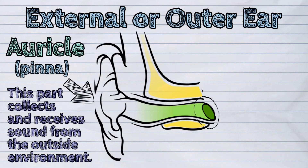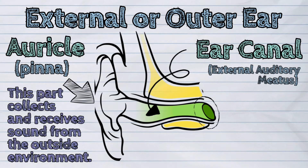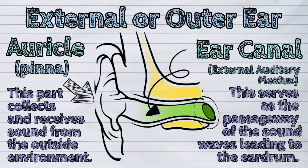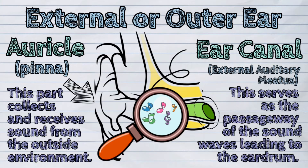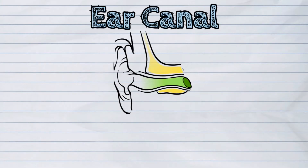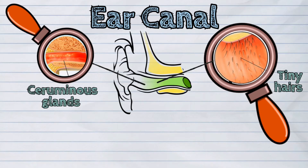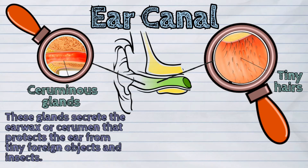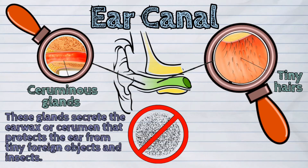The auricle collects and receives sound from the outside environment. The auricle opens into the ear canal or external auditory meatus. The ear canal serves as the passageway of the sound waves leading to the eardrum. It contains tiny hairs and ceruminous glands, which secrete the earwax or cerumen that protects the ear from tiny foreign objects and insects.